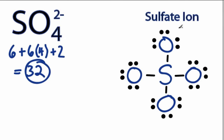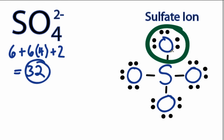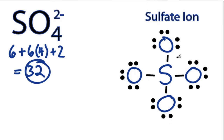Looking at the structure here, we see that each of the oxygens has 8 valence electrons — 2, 4, 6, 8 — as does the sulfur here.